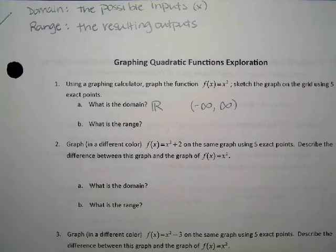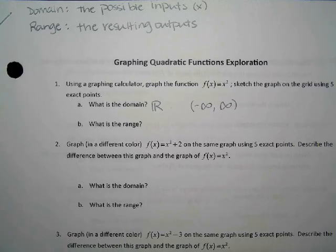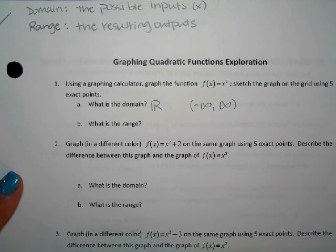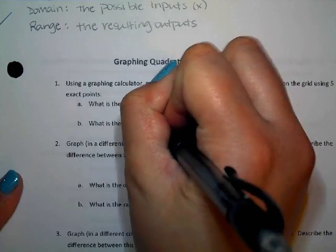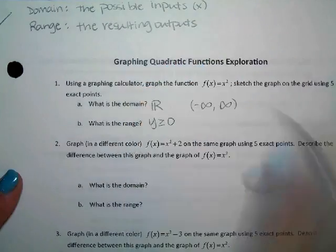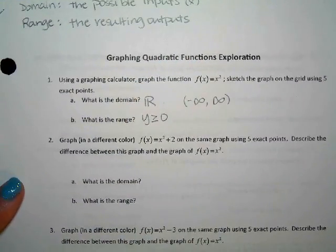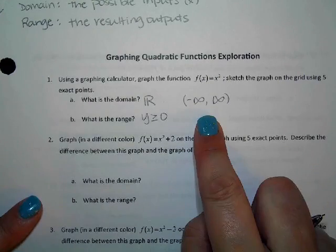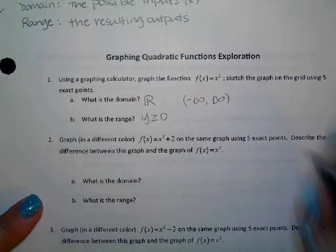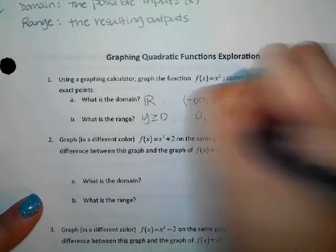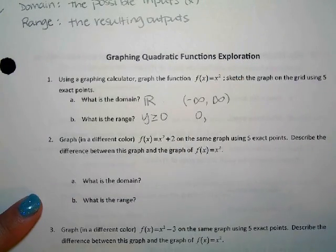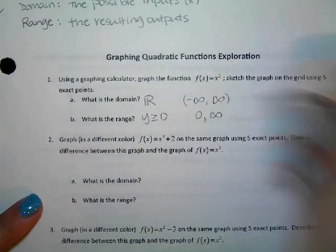Can we get zero as an answer? Yes, we can get zero. But we can't get negative one as an answer, we can't get negative five as an answer. We can get one as an answer. It would be Y is greater than or equal to zero. So that is the set notation.